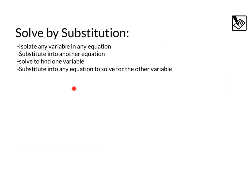The next method we're going to look at is solving by substitution. For substitution, you want to isolate any variable in any equation, then substitute into another equation, solve to find one of the variables, and then substitute that variable back into any equation to solve for the other variable or variables if you have more than one missing.